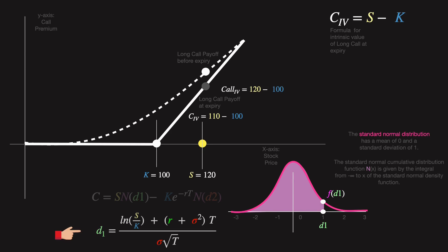d1 is like a measuring tool we use to estimate the likelihood of something happening — in this case, whether or not an option will make money. In the formula, the natural log of S over K is basically asking: right now, is the stock's price more or less than what I'd agreed to buy or sell it for when the option expires? R plus sigma squared over 2, times T, is like looking into a crystal ball to estimate how the stock's price could change over the lifespan of the option, taking into account the interest rate R and how wild the stock's price swings could be, sigma.